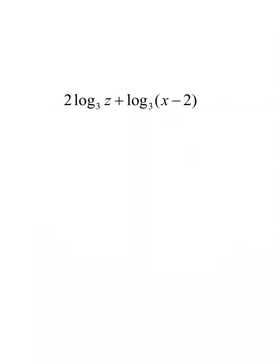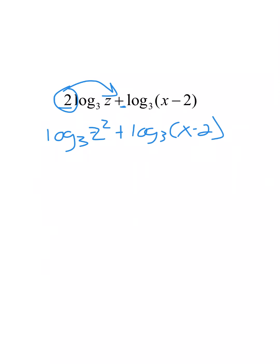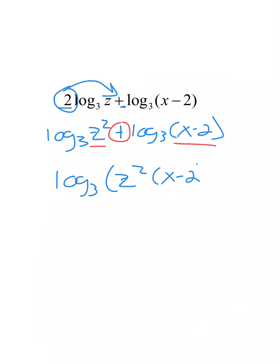Now we go backwards — we have an expanded expression and we'll simplify it by combining everything as a single log. First, deal with the numbers in front: the 2 gets moved in to become an exponent, giving log base 3 of z squared plus log base 3 of x minus 2. We have a plus sign between them, so when combining we multiply the expressions: log base 3 of z squared times x minus 2. If we go one step further we'd expand to log base 3 of z squared times x minus 2z squared.